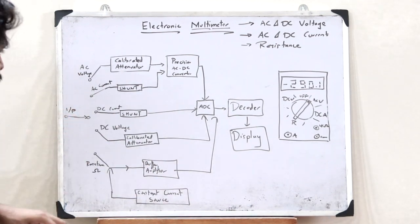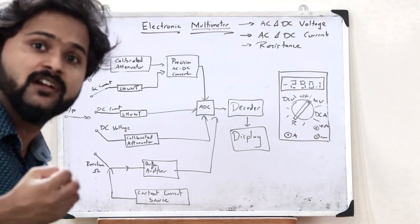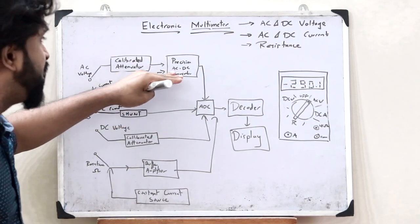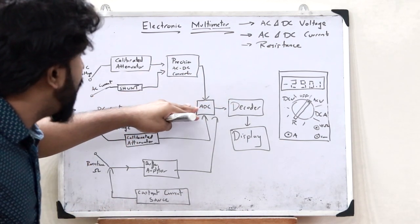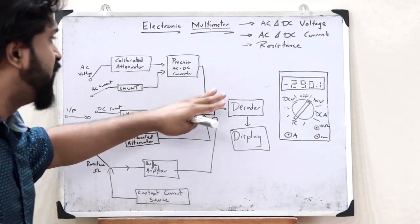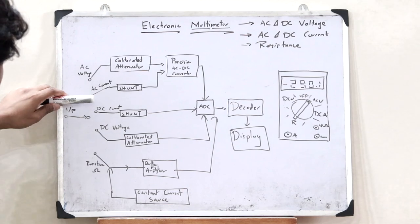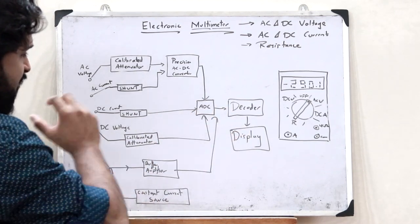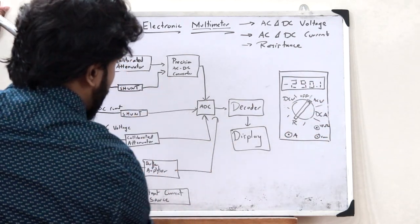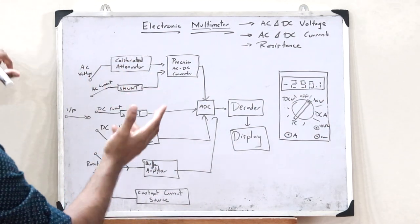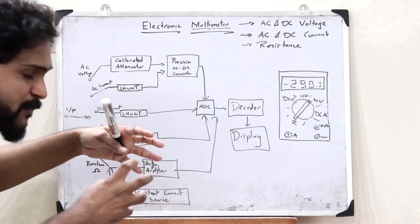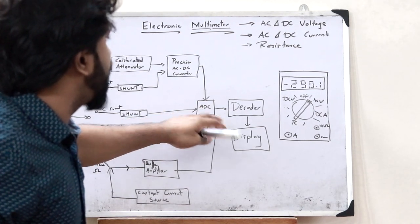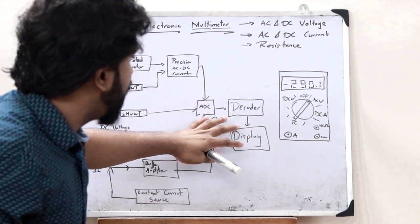If it is AC current to be measured, it is passed through a shunt — a very low resistance — then through a precision AC to DC converter, then through an analog to digital converter, and the digital value is displayed. For DC current, it is simply passed through a shunt and then through an analog to digital converter where it is digitalized and displayed. For DC voltage, since it is voltage, the power must be reduced, so it is passed through a calibrated attenuator and then through the analog to digital converter before being displayed.